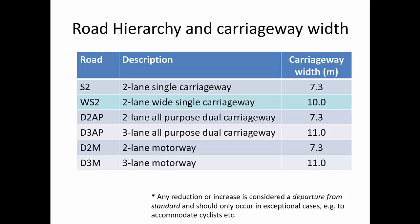Going up in the hierarchy we've got D2AP and D3AP, which are all-purpose dual carriageways, and D2M and D3M, which are the motorways. You can also get D4M and D5M. Note that the carriageway width remains the same — the width of a single lane is always 3.65 metres, so 7.3 metres is two lanes of 3.65 metres.